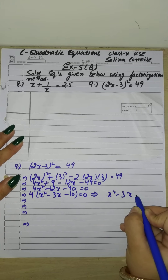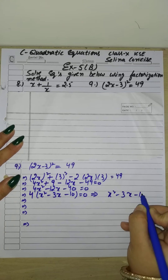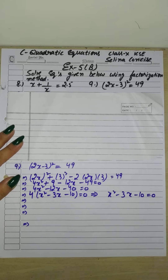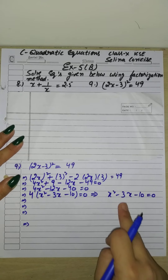So x² − 3x − 10 = 0 is our simplified equation. Now we will factorize it by splitting the middle term.